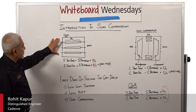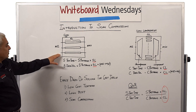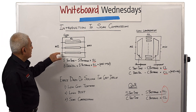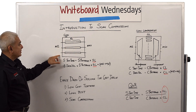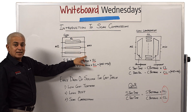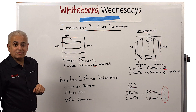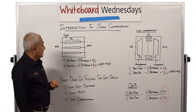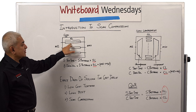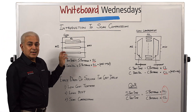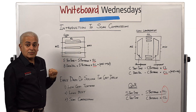Let me start with describing scan design. What you see in this picture is a design with three scan chains. There are three scan-ins and three scan-outs, and you have three scan chains in this design which represent all the flip flops of the design. As designs have got larger, the number of flip flops has increased much more than the scan I/O, and these scan chains have got longer and longer.